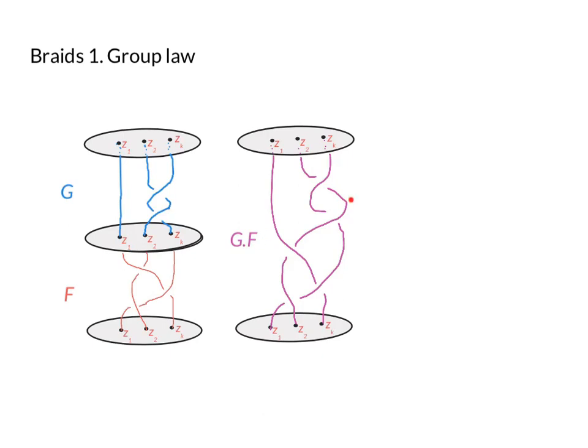So you might like to think about why this gives you a group. For example, what is the identity element? What braid would you have to stack on top of any other braid to get the same braid back? What would an inverse look like and why would it be associative? So I'll leave it as an exercise for you to think about those things.